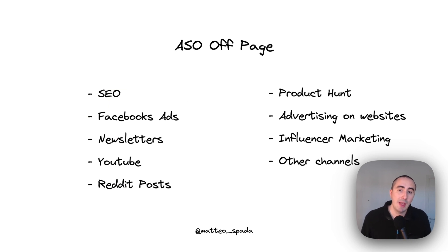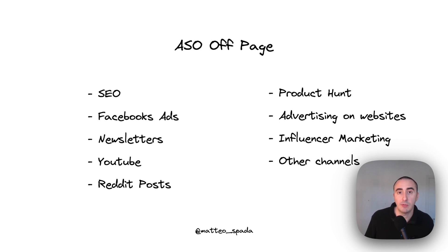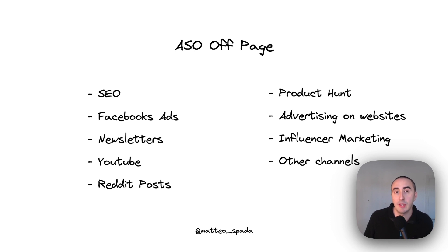When we talk about ASO off-page, we talk about all the channels we can use to bring traffic to our application. Some of these channels are Search Engine Optimization with, for example, a blog, or Facebook ads, or a newsletter, and so on. All these channels allow our application to obtain more downloads and increase our ranking for specific keywords.